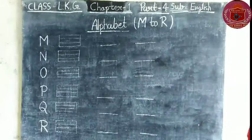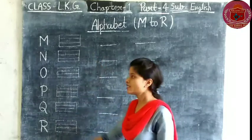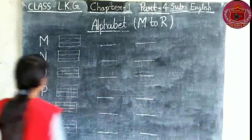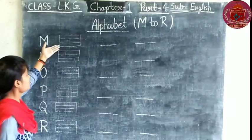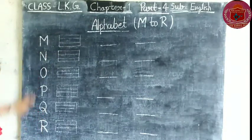So today we will learn about how to write M to R alphabet. In your English notebook, you can use the upper two lines to write these alphabets.